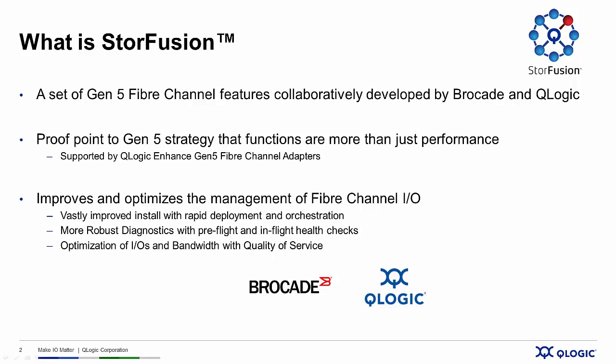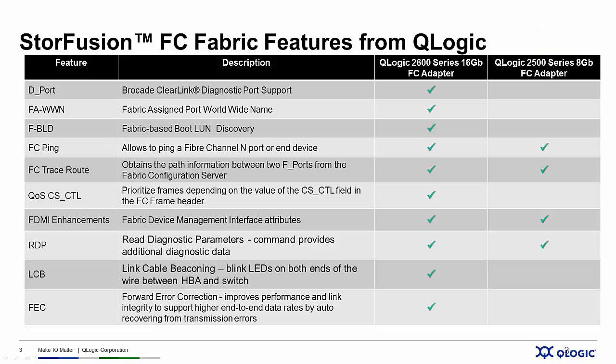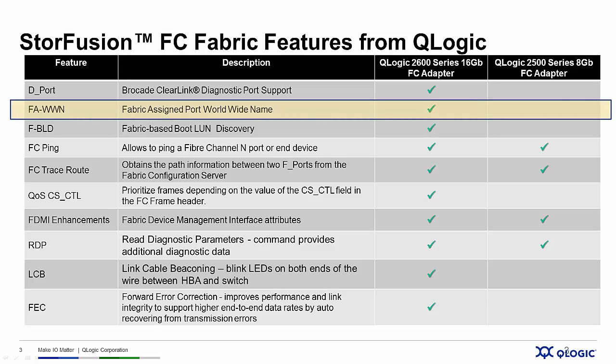If you want your SAN to be smart, fast, and easy to manage, then you need to upgrade to Gen5 16GB fiber channel today. Here are the 10 features that are part of the StoreFusion technology family, and we're going to be focusing in on the feature called Fabric Assigned Worldwide Name.